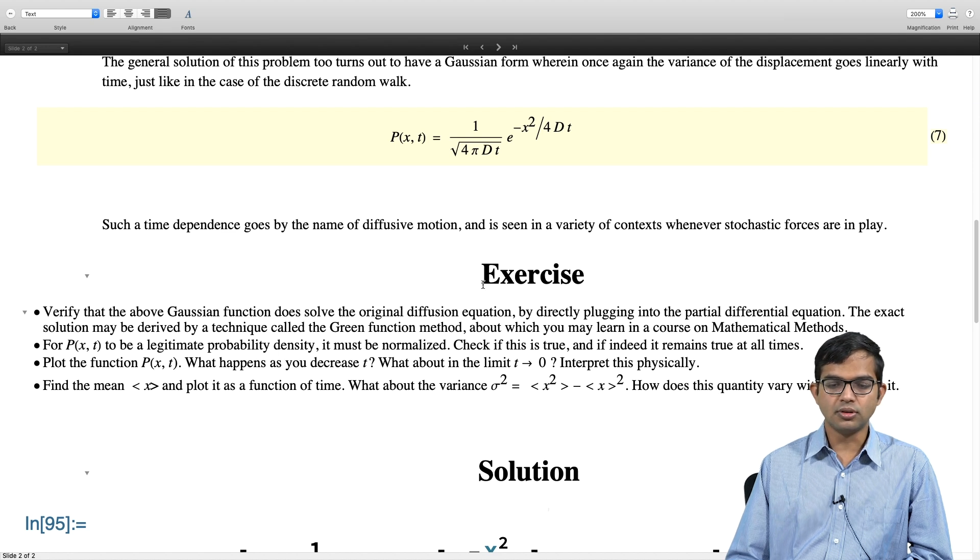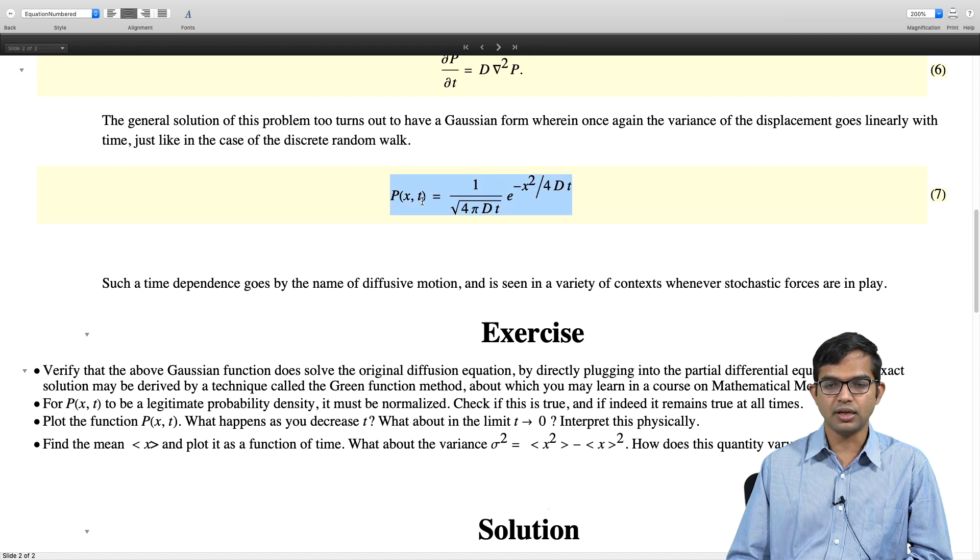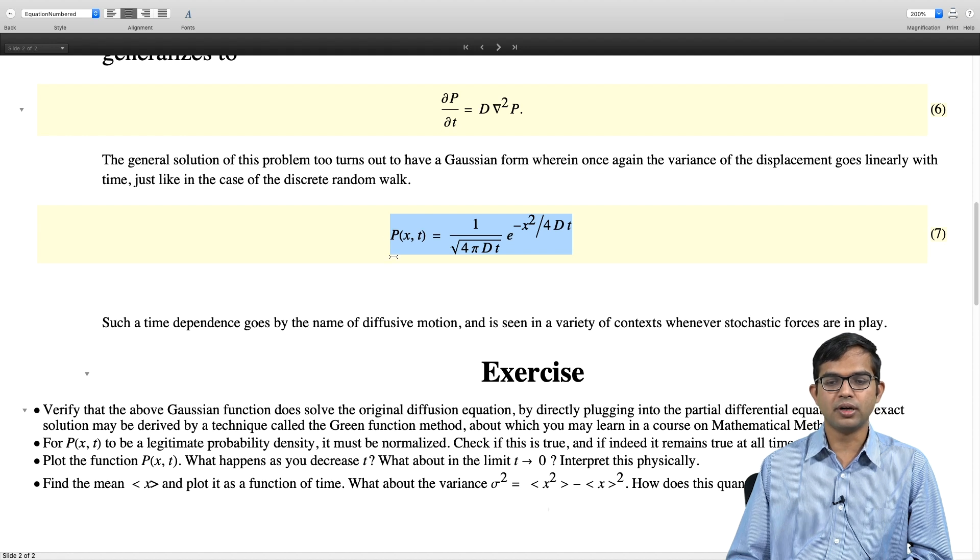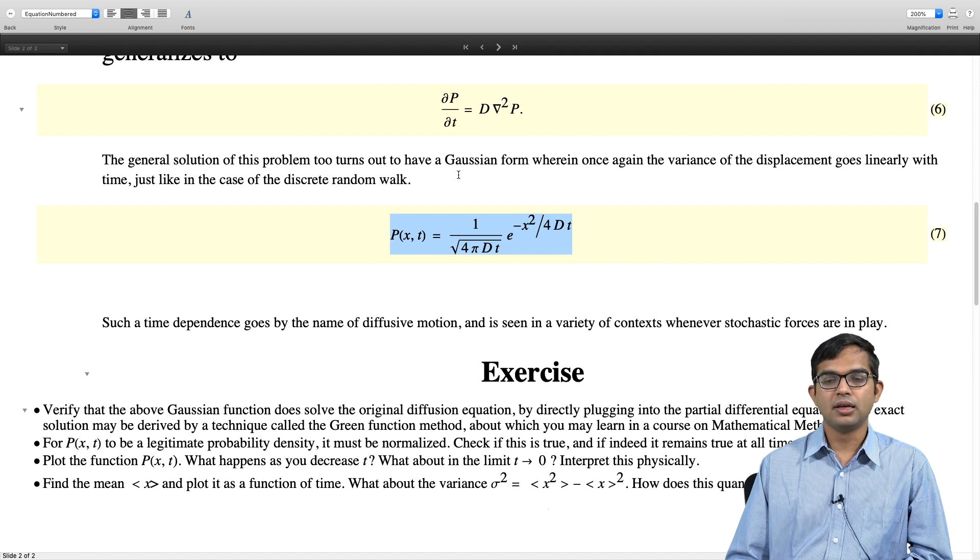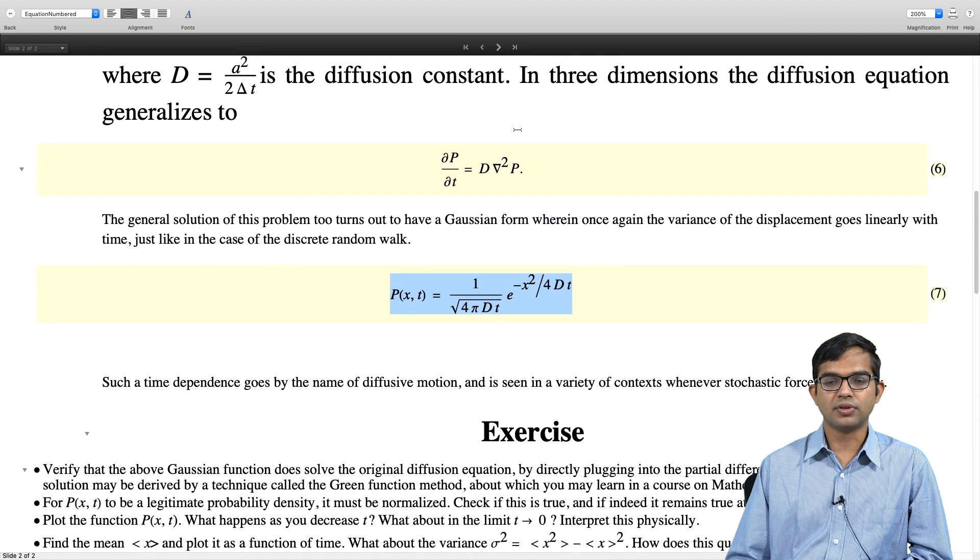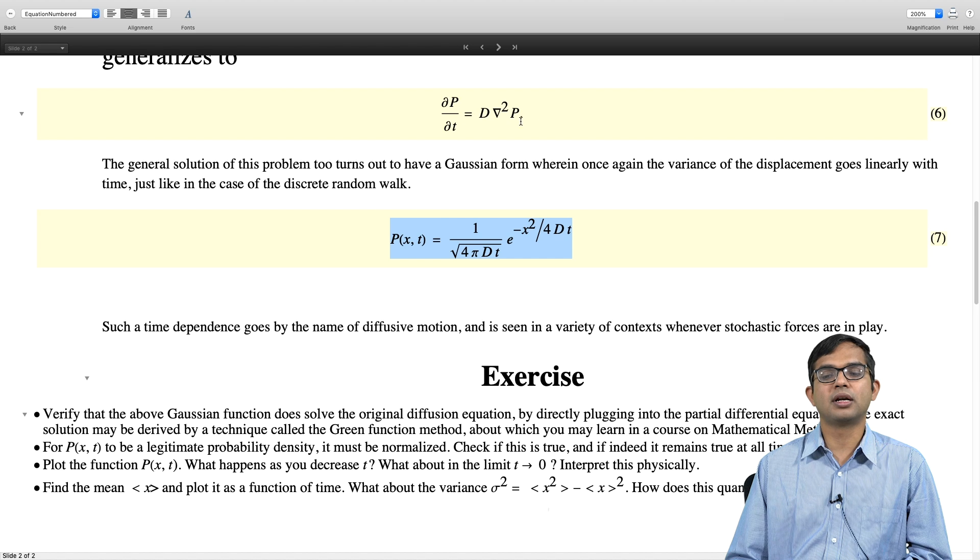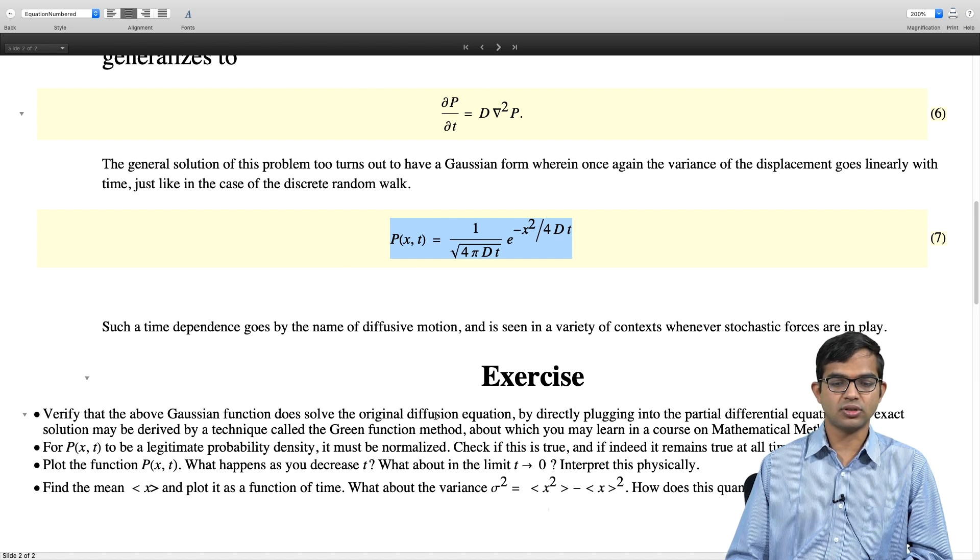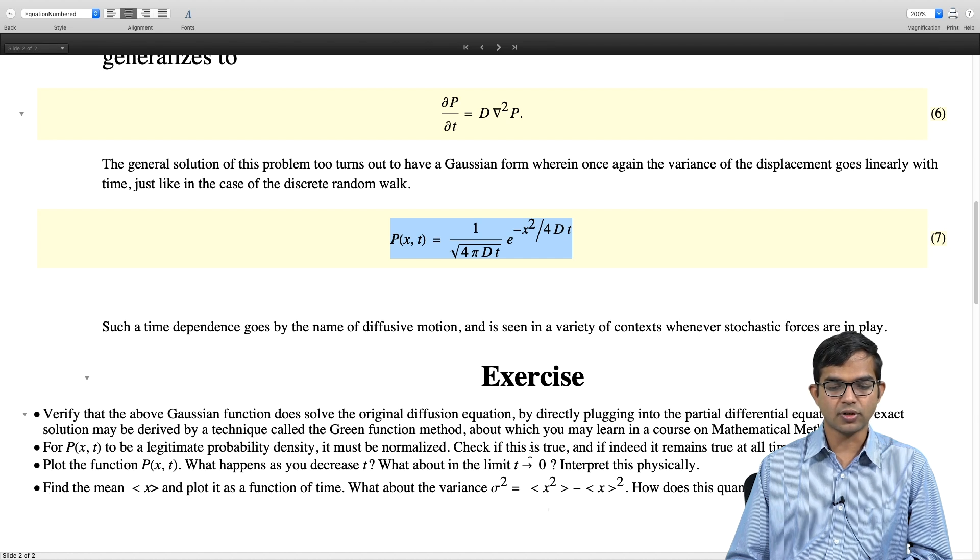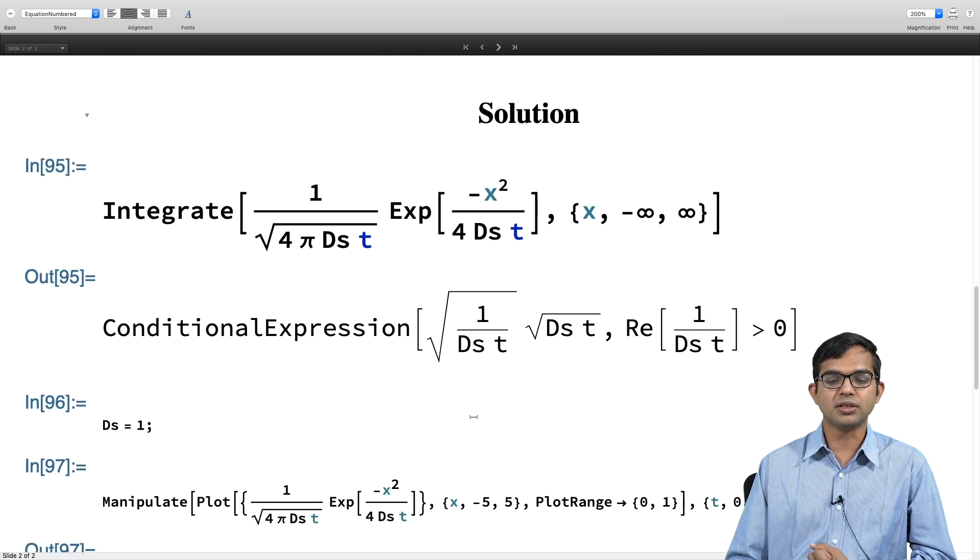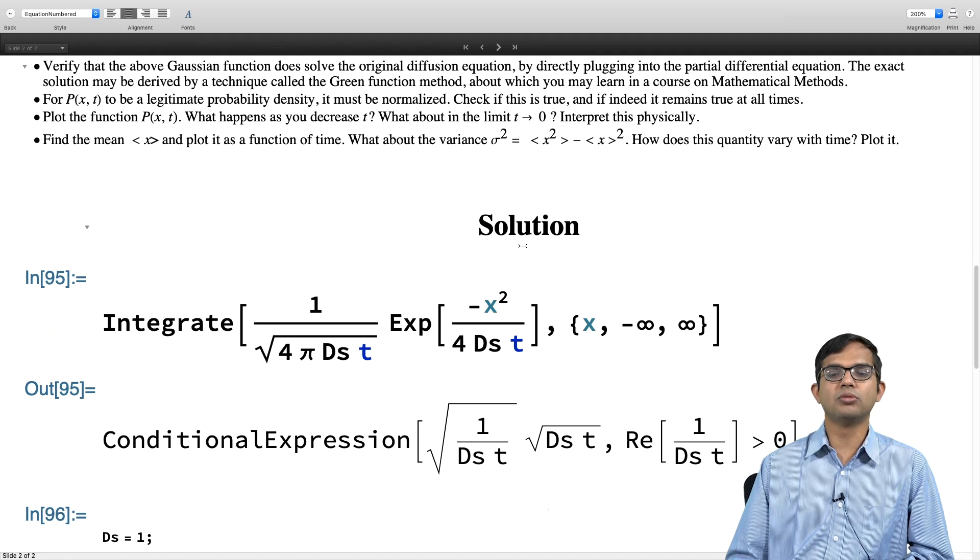You should also do this exercise of plugging in this whole function P(x,t) into this equation here, dou P by dou t on the one hand on the left hand side and D times del squared P. Del squared P is a vector second order differential that you have to take. If you take it appropriately and check for yourself that what you get on the right hand side is the same as on the left hand side, that is something that I am leaving it open for you as an exercise. But the other things I have already shown you how to visualize these different quantities and show you what it physically means, what is this spread and how it goes as a function of time. That is what this module was about. Thank you.